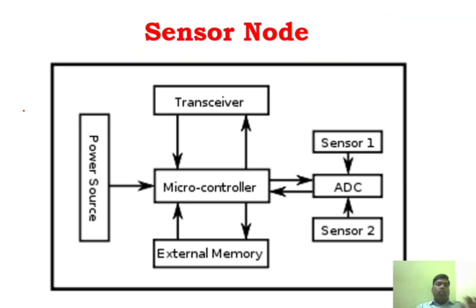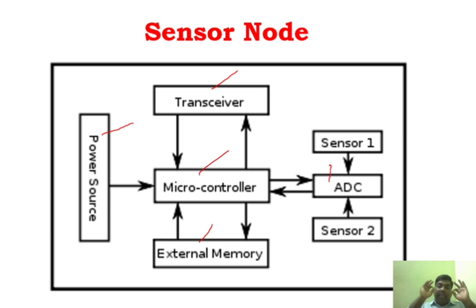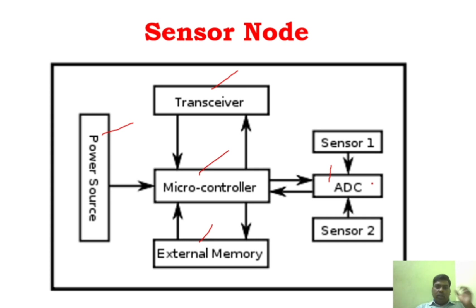Let's take a simple example of what a sensor node looks like. This is a simple sensor node with two different sensors. A sensor node has all these components: a microcontroller, external memory, a transceiver, a power resource, and an analog-to-digital converter. These are the very basic elements of a sensor node. Sensor 1 and Sensor 2 are connected to the analog-to-digital converter, which gathers the information and converts the signal to digital form.